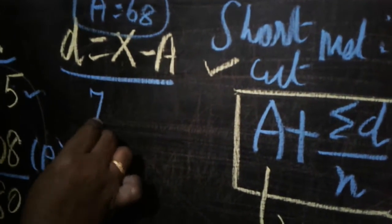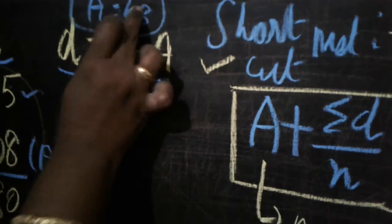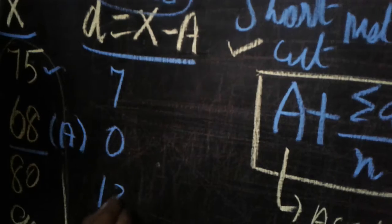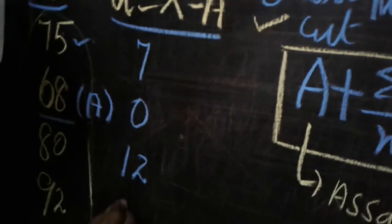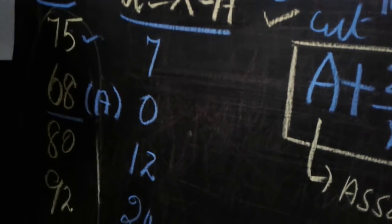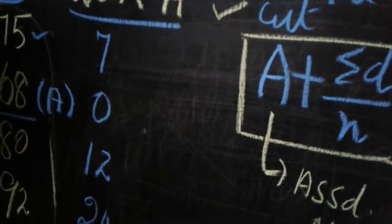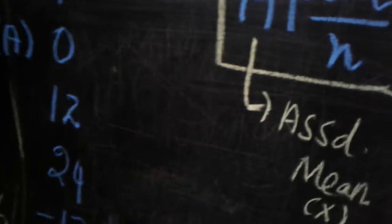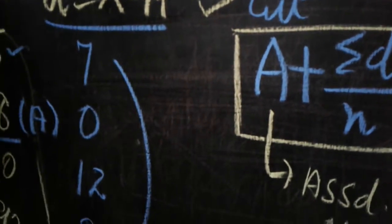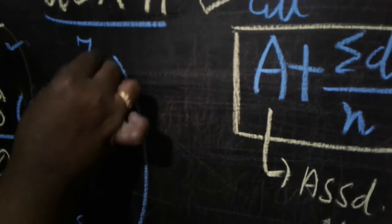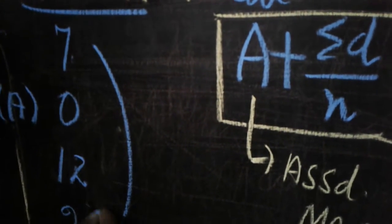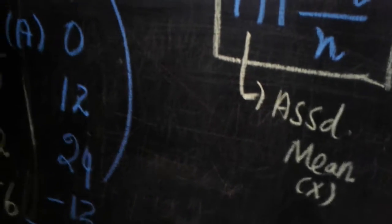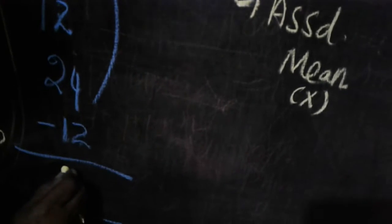Computing d = x − a for each value: 75 − 68 = 7; 68 − 68 = 0; 80 − 68 = 12; 92 − 68 = 24; 56 − 68 = −12. Only one value is negative; all remaining values are positive. Adding the positive values: 24 + 12 + 7, then subtracting 12, we get the answer 31.